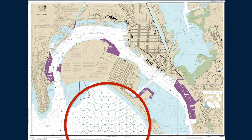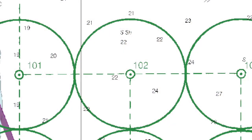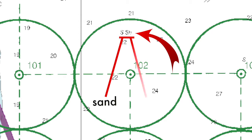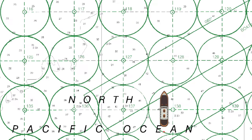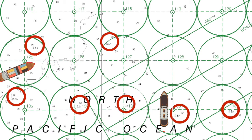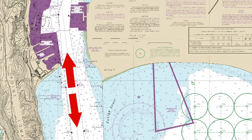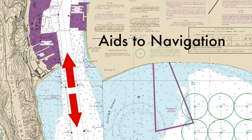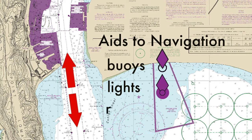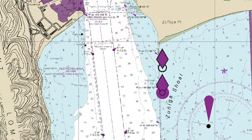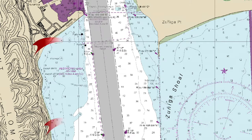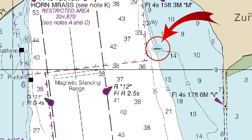Now look closely at the green circles — the anchorages Steve talked about — off the Silver Strand. See those letters S and SH? S stands for sand and SH for shells. Those letters tell the navigator what the bottom is made of so they can determine how best to anchor their ships. In order for navigators to move safely into and out of a harbor or bay, they need to be able to read and interpret other important symbols on the chart. These symbols are known as aids to navigation and include such things as buoys, lights, and range markers. All of these symbols are used to mark the edges of dredged channels as well as dangers such as rocks and wrecks.